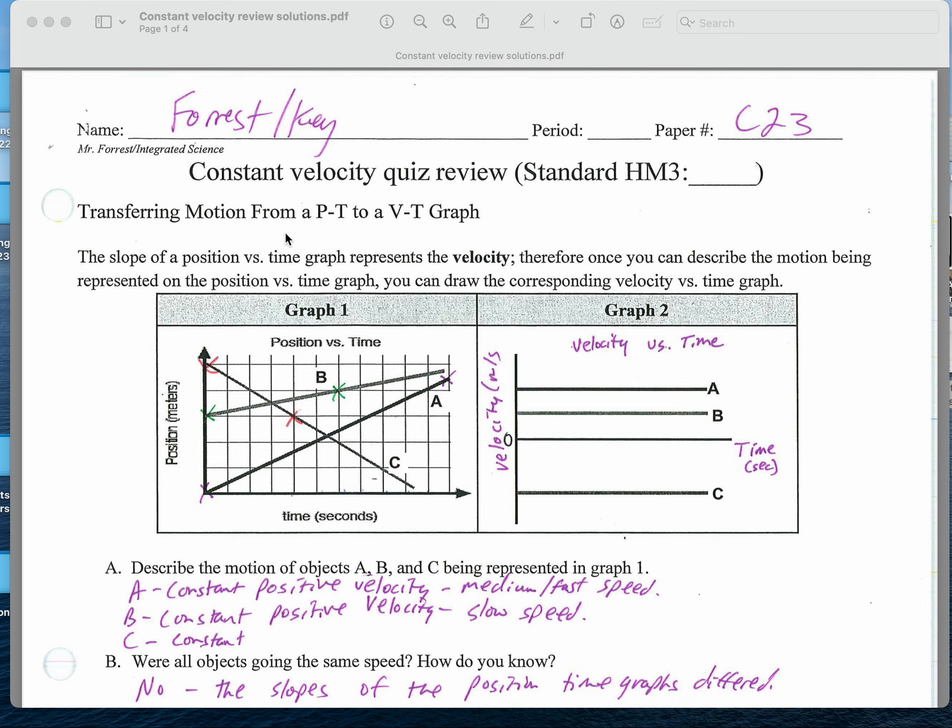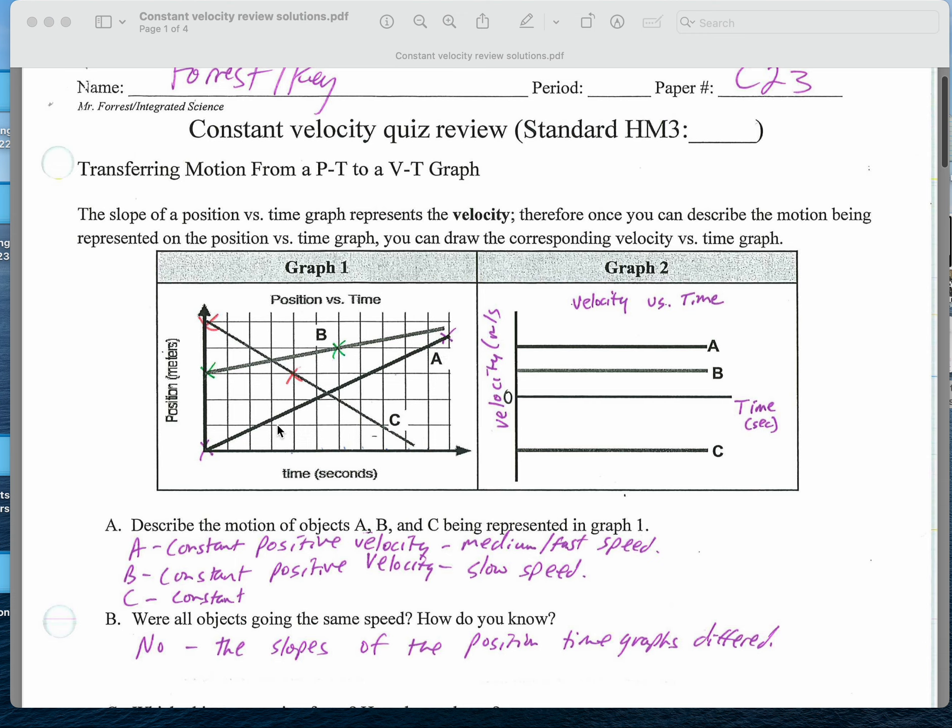Basically the idea here is transferring information from a position time graph to a velocity time graph. A little bit of this was cut off, which was annoying. This is a velocity time graph. This is meant to be zero velocity over here in meters per second. So you've got graph A, which is here, graph B, which is here, and graph C, which is here.